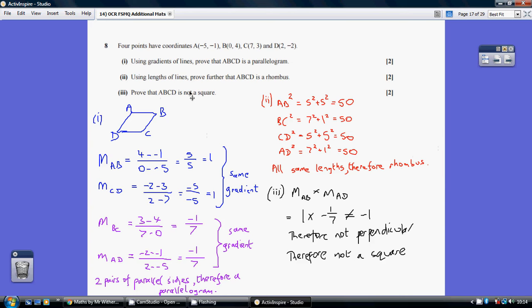Prove that ABCD is not a square. A square would have 90-degree angles in the corners, meaning perpendicular lines. If lines are perpendicular, when you multiply the two gradients together, you get minus 1. That's the definition of perpendicular lines.